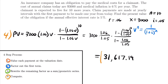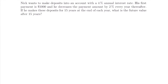That is the final answer: $31,617.19. We have found the present value of the geometric annuity, or more specifically, the present value of the obligation that this insurance company needs to pay. Let's look at another example.